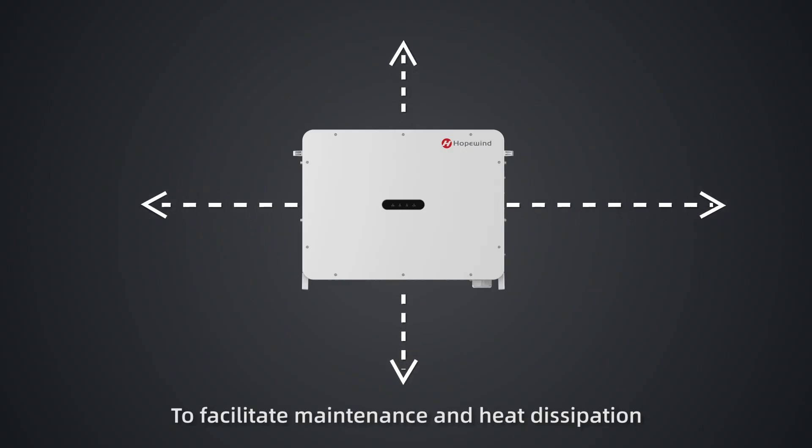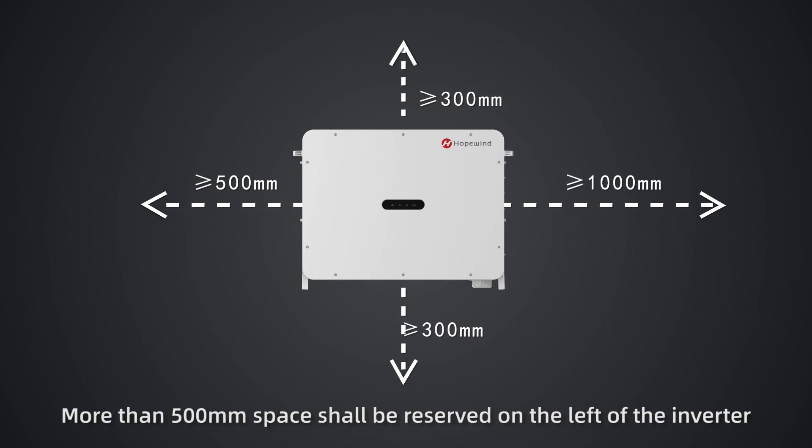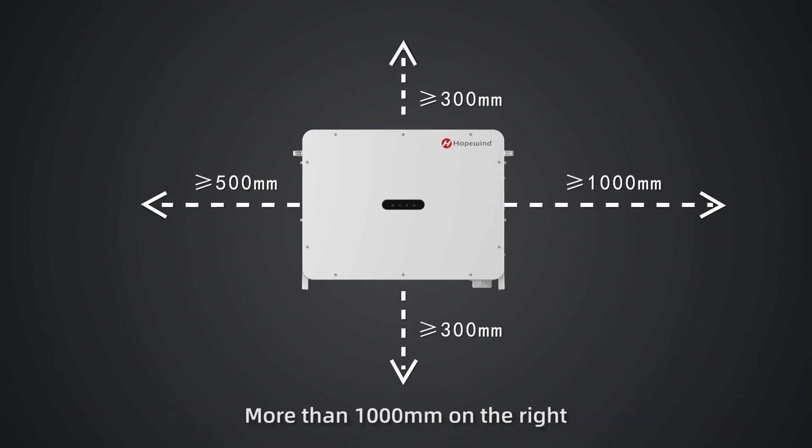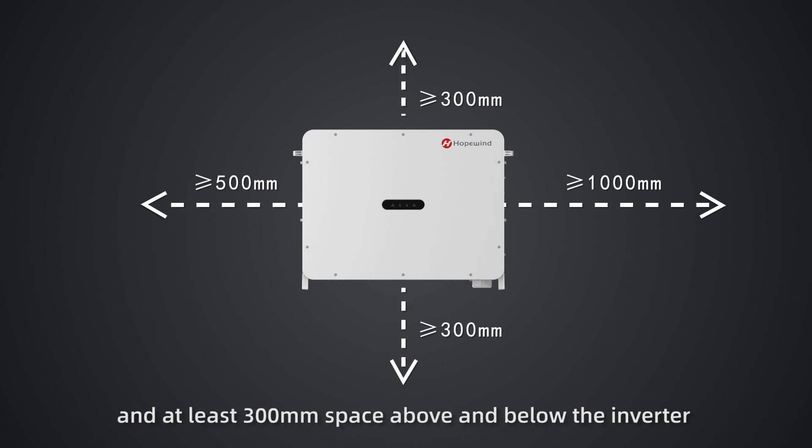To facilitate maintenance and heat dissipation, more than 500mm space shall be reserved on the left of the inverter, more than 1000mm on the right, more than 300mm on the back, and at least 300mm space above and below the inverter.